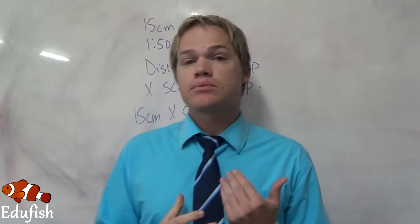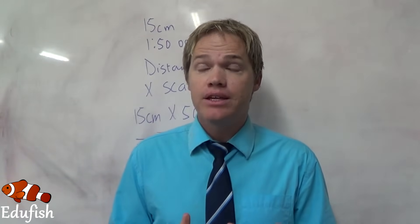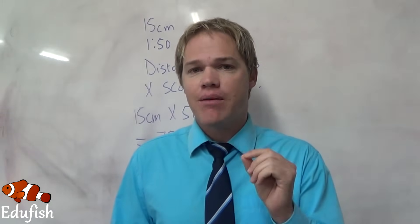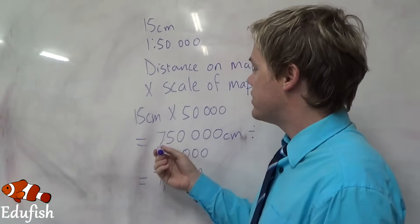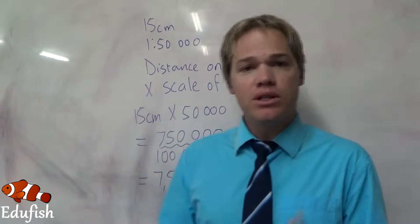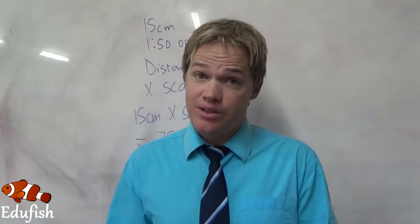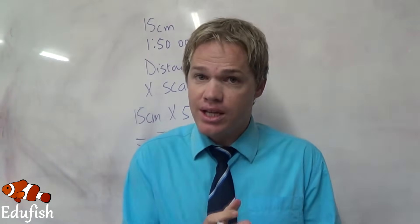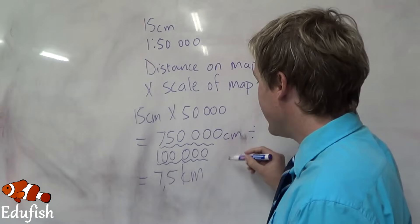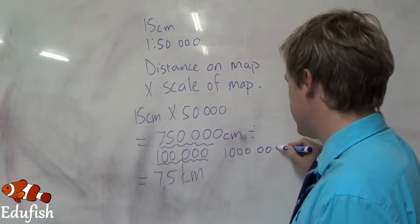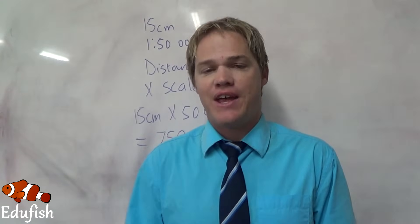That is how simple it is. Some students might ask: what if the scale is different, like 1 to 80,000? The method stays exactly the same. The number you calculate will be bigger, but you still divide by 100,000 and it gives you the right answer. Most of the time you will work in centimeters, but there might be situations where you measure in millimeters. Then the only thing that changes is you divide by 1,000,000 to convert to kilometers, but the method stays exactly the same.